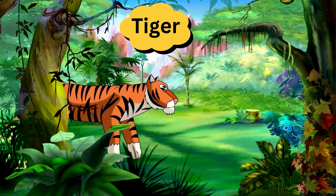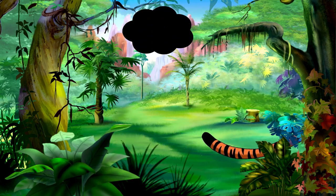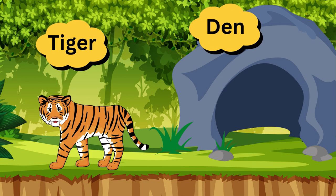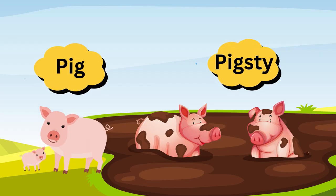Tiger. Tiger lives in a den. Tiger lives in a den. Tiger — den. Pig. Pigs live in a pigsty. Pig lives in a pigsty.